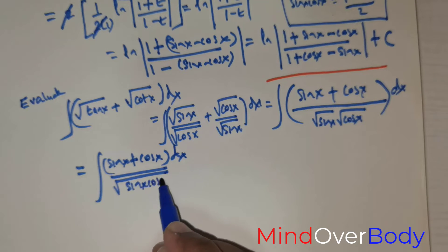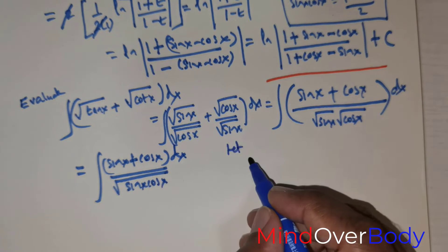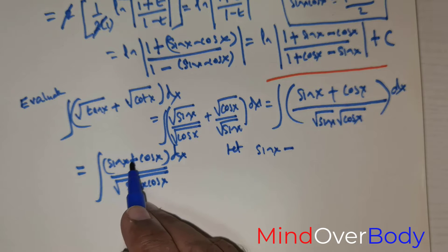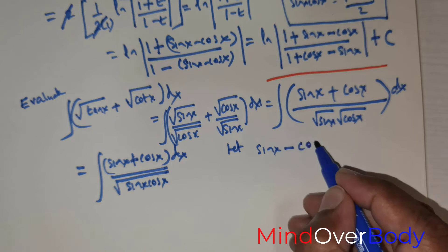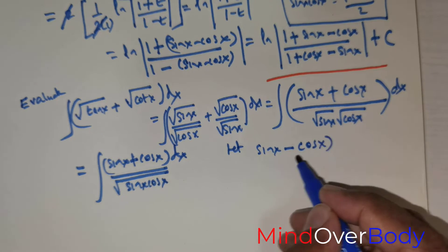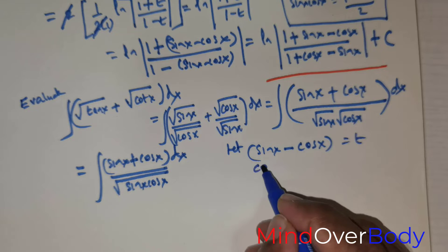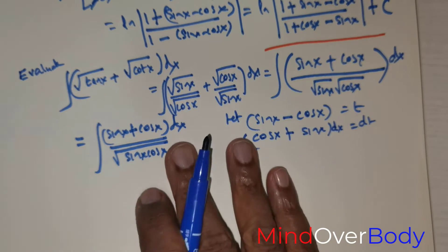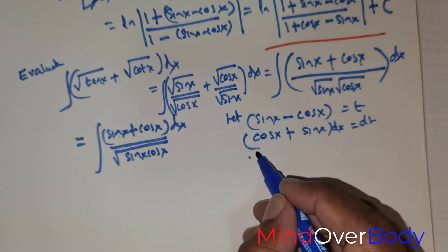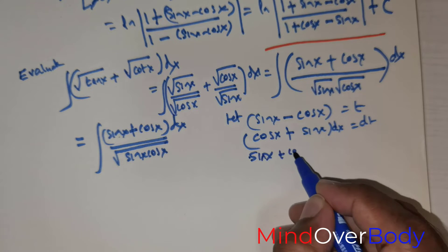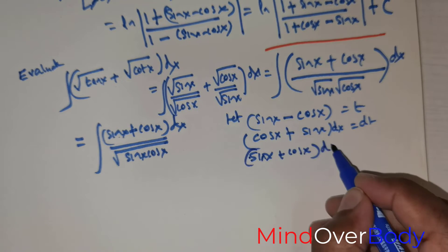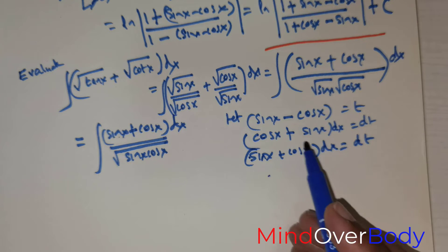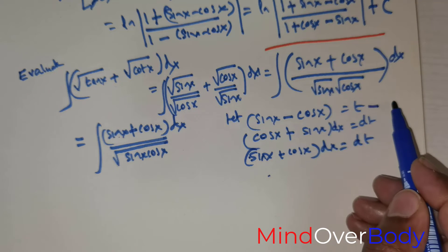Now I make the substitution: let sin x − cos x = t. Differentiating, we get (cos x + sin x) dx = dt. The numerator sin x + cos x dx is exactly dt, so that substitution is fine. But we still need to express the denominator √(sin x · cos x) in terms of t.